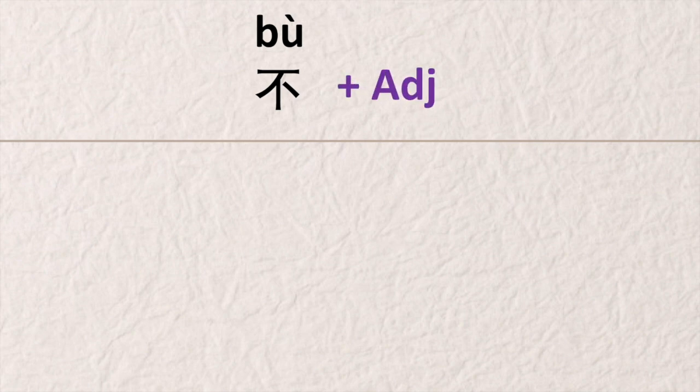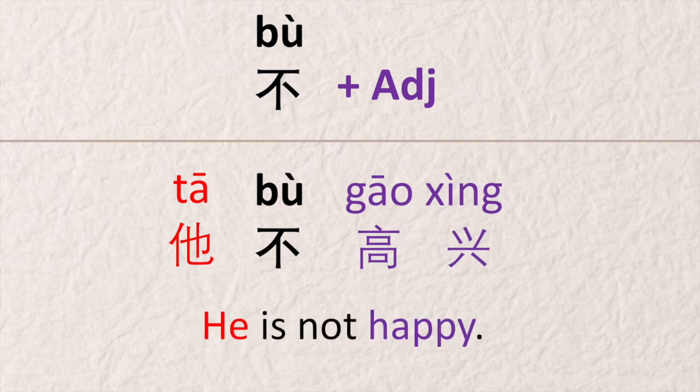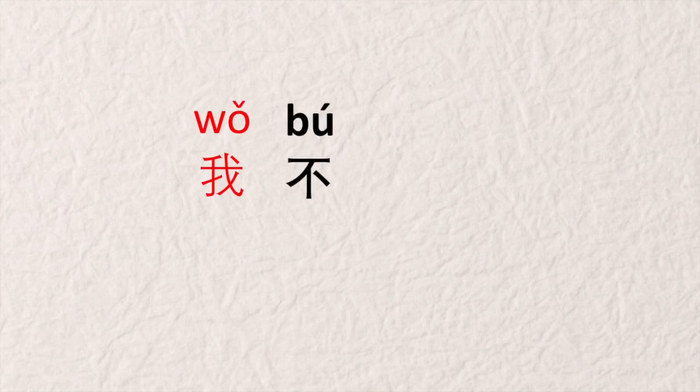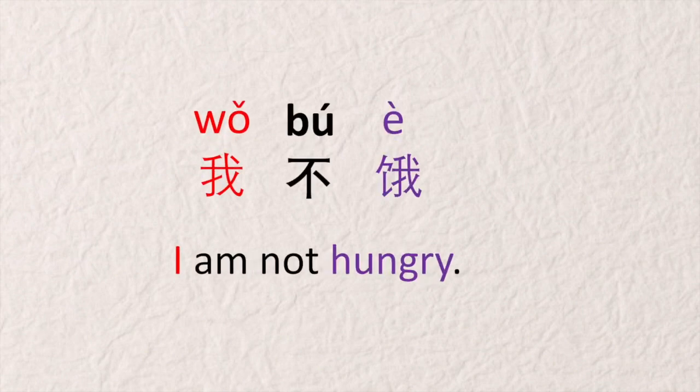The first negation word we're going to learn is 不. We can use 不 to negate adjectives. For example, 他不高兴 — he's not happy. Simply place 不 before the adjective 高兴: 他不高兴. 我不饿 — 饿 is an adjective — 我不饿, I'm not hungry.